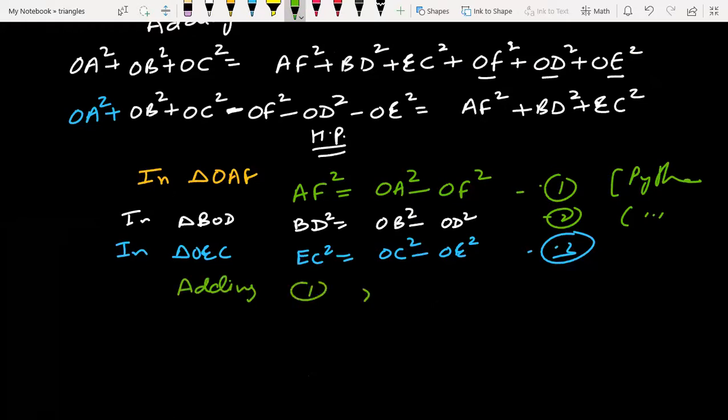If we are adding, AF square plus BD square plus EC square equal to, we will write them all.